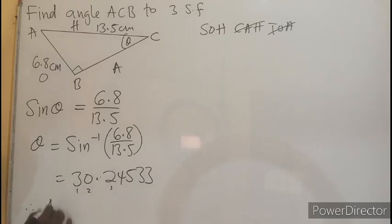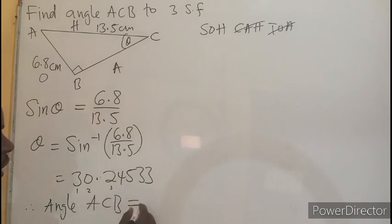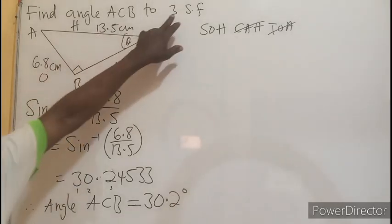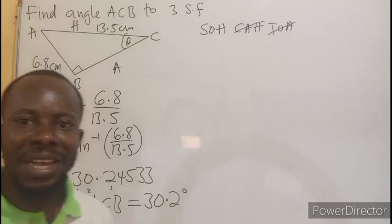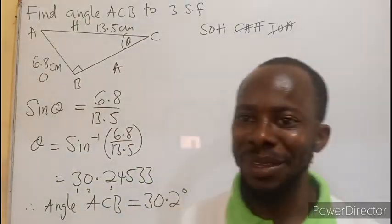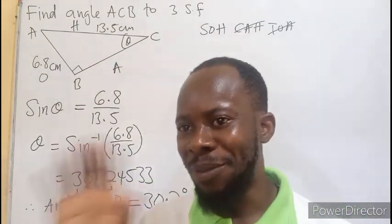So therefore, angle ACB is going to be equal to 30.2 degrees. Listening to the question for 3 significant figures, I believe you get the concept. Good. Thanks for watching. Bye-bye.